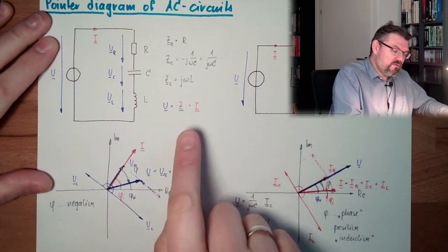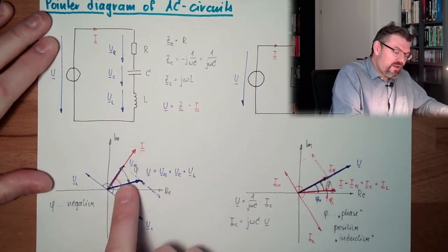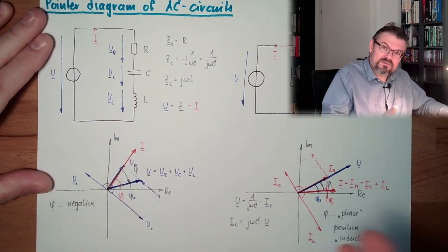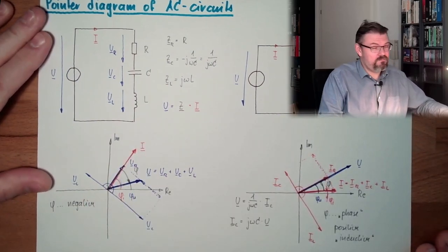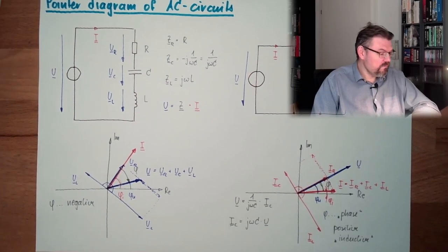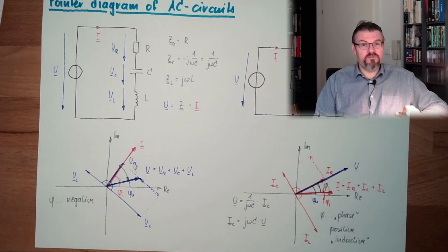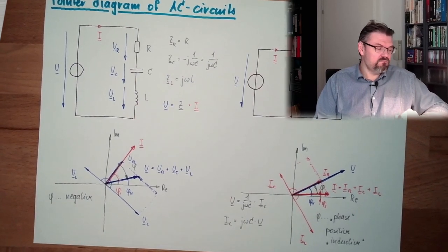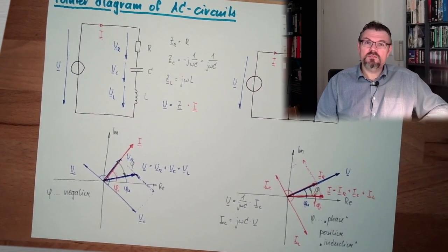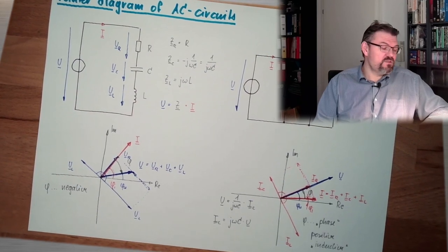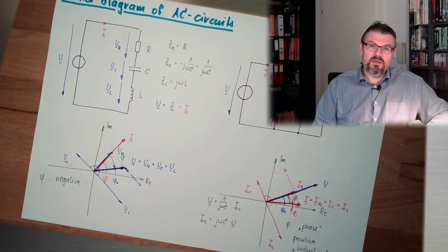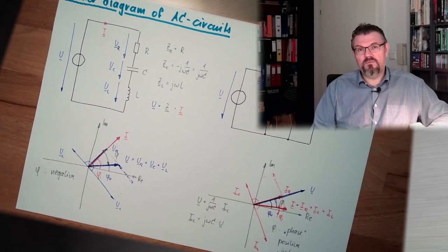And if I would calculate the complete impedance of this and then use this one, I would exactly have this. It turns out the same. So we can have a phase shift caused by some coils, capacitors, a phase shift between current and voltage.